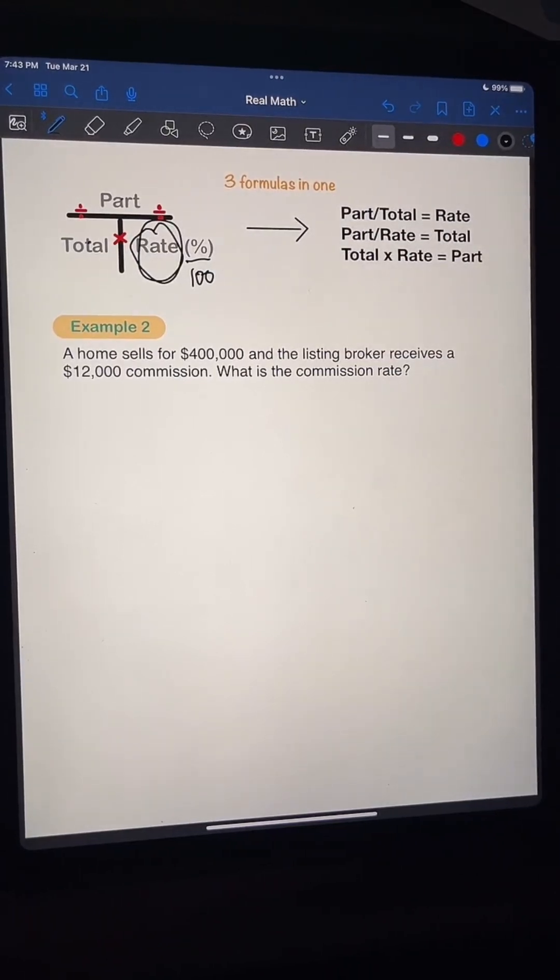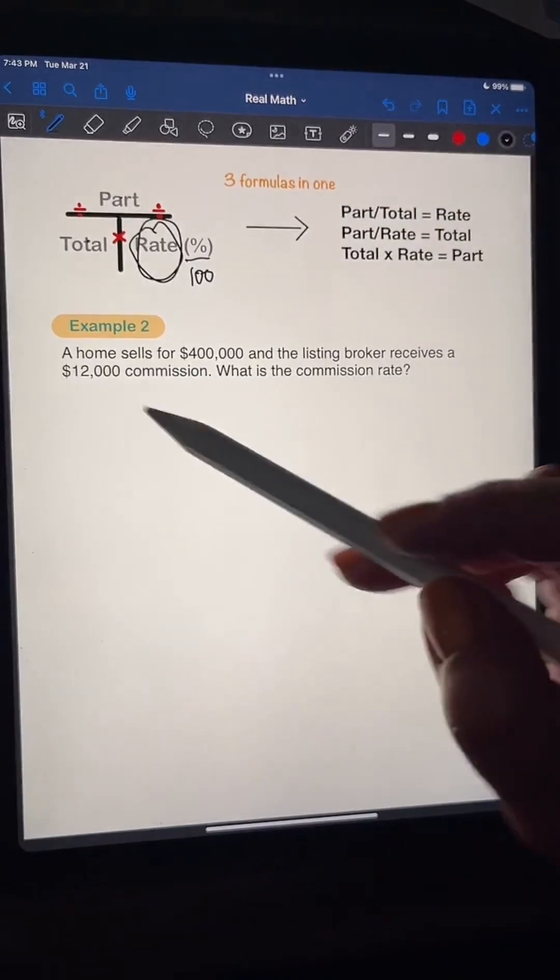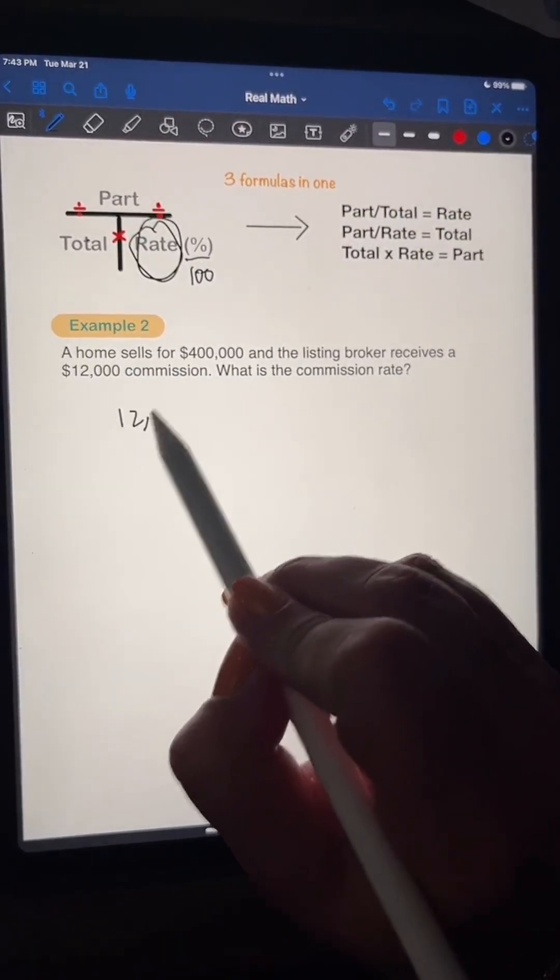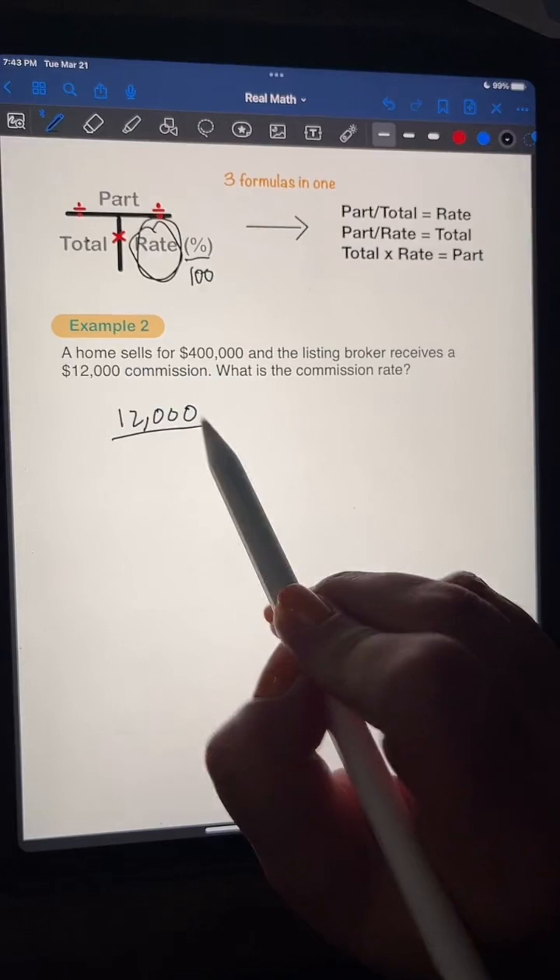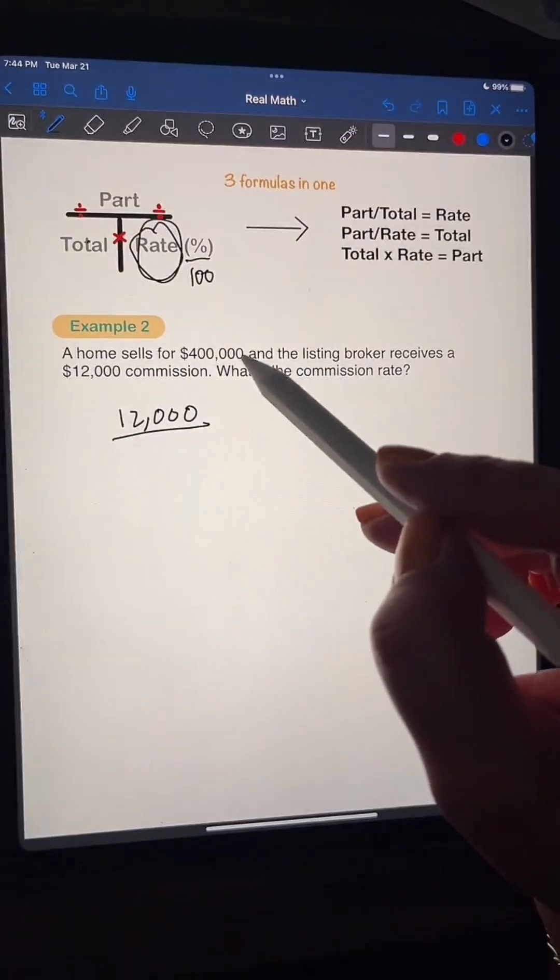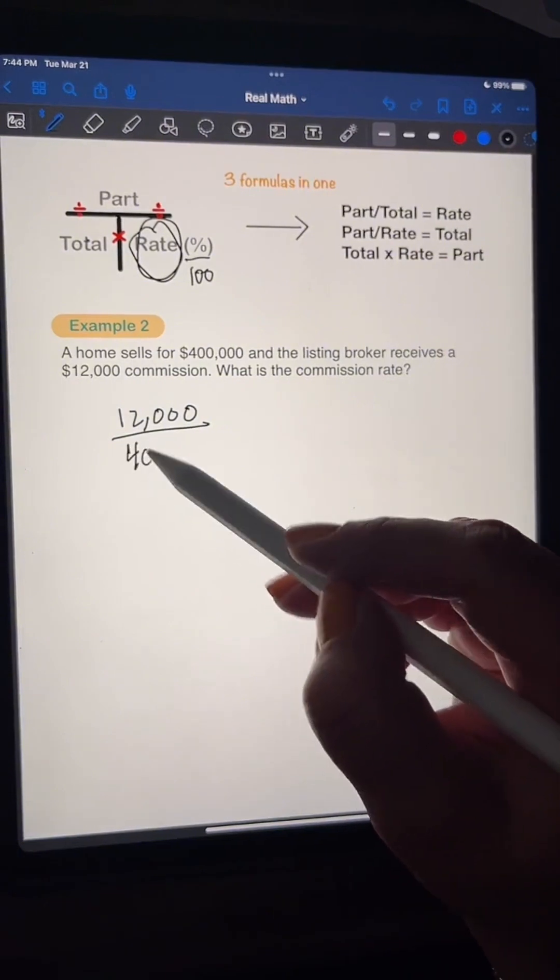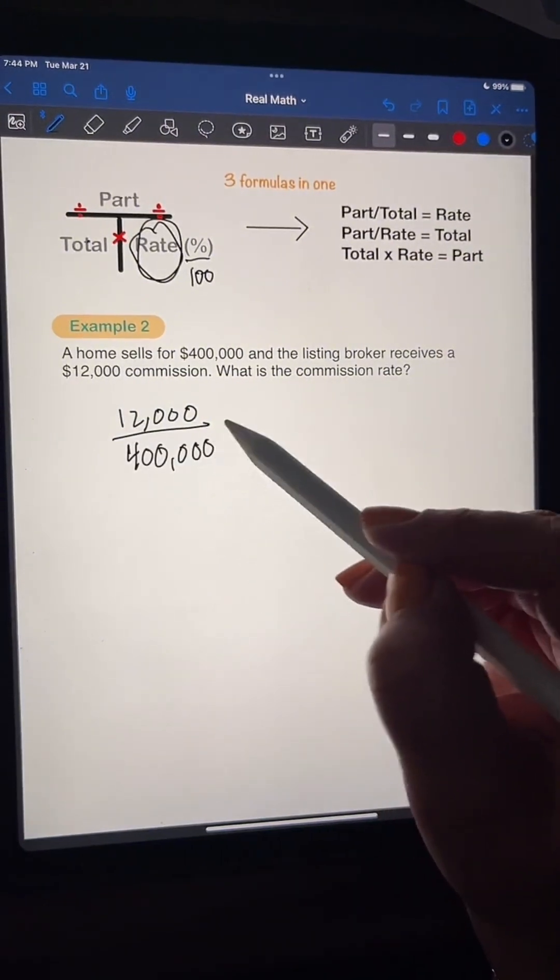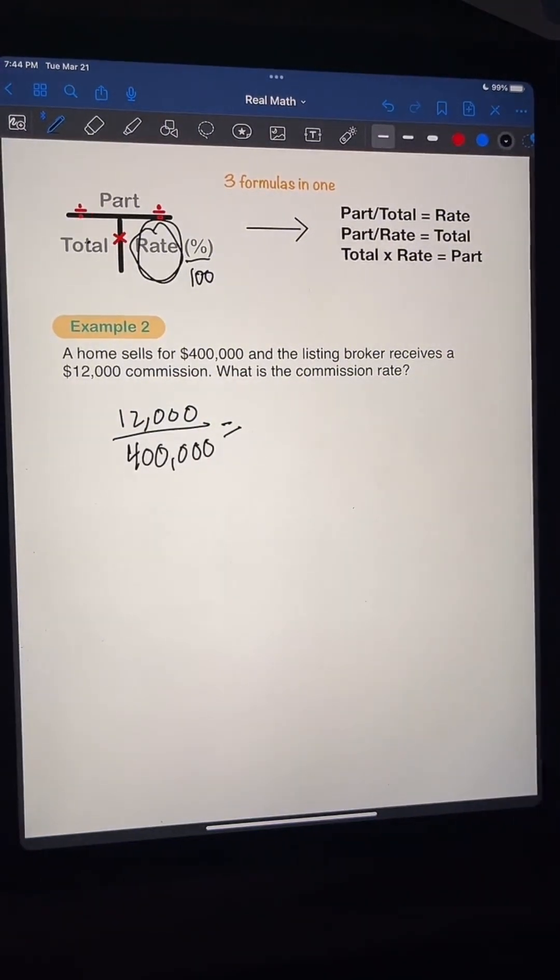So the part is the amount of commission that they got, which is $12,000, divided, because it's telling me I have to divide, by the total amount of what the house sold for.